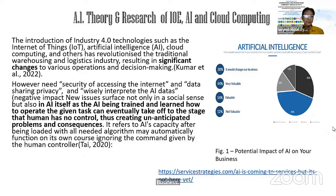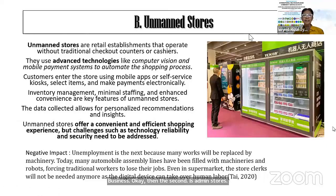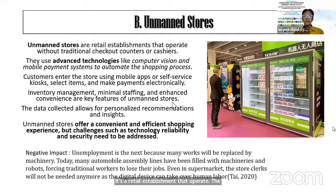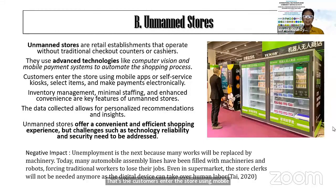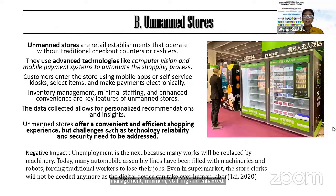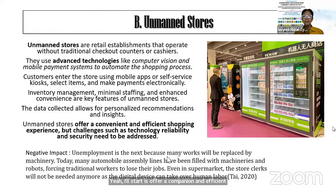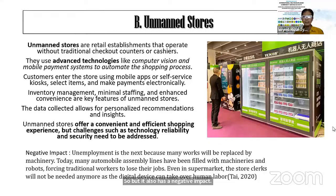The second topic is unmanned stores. An unmanned store is a retail establishment that operates without traditional check-out counters or cashiers. They use advanced technologies like computer vision and mobile payment systems to automate the shopping process. Customers enter the store using a mobile application or self-service kiosk, select items, and make payments electronically. Inventory management, minimum staffing, and enhanced convenience are key features. The data collected allows for personalized recommendations. However, a challenge is the negative impact of unemployment, as many jobs will be replaced by machines.